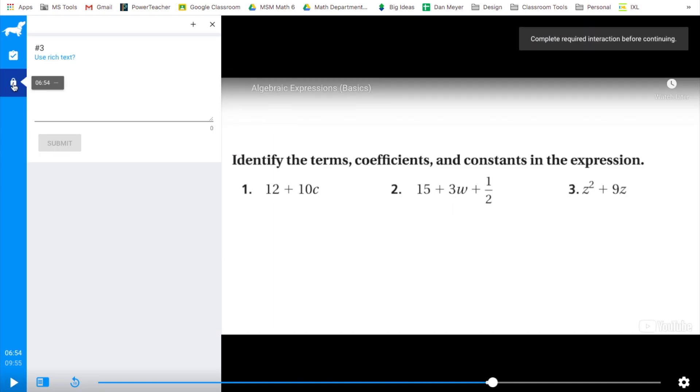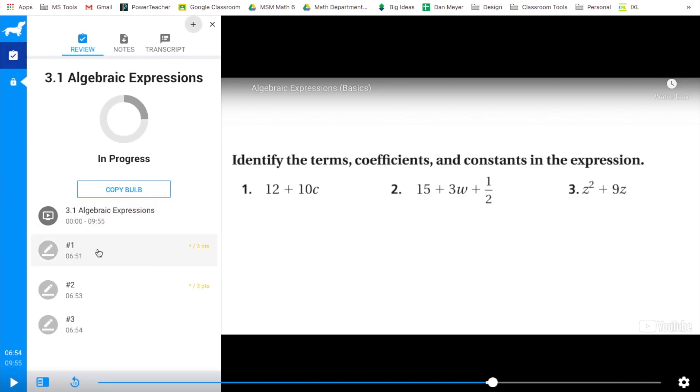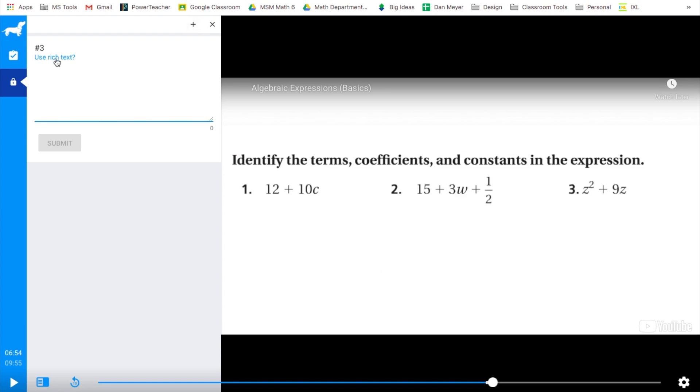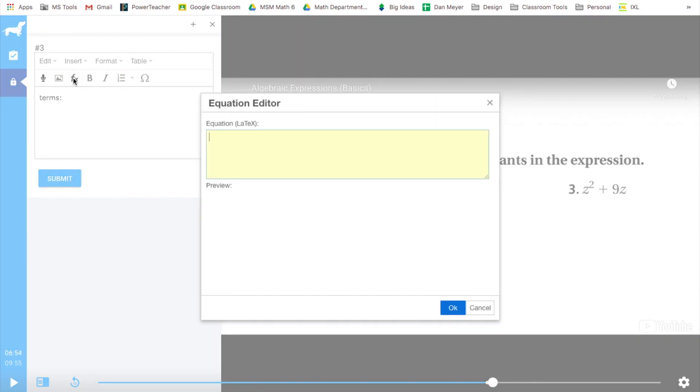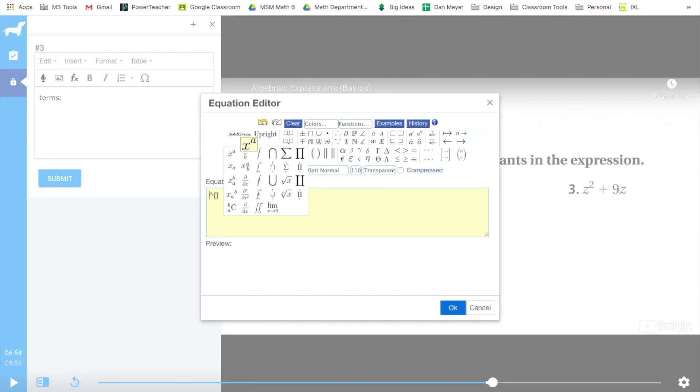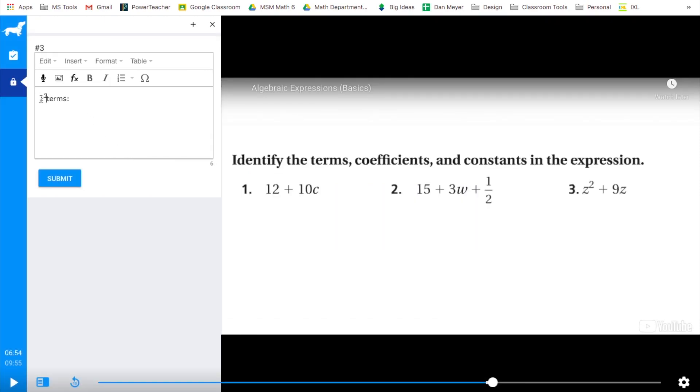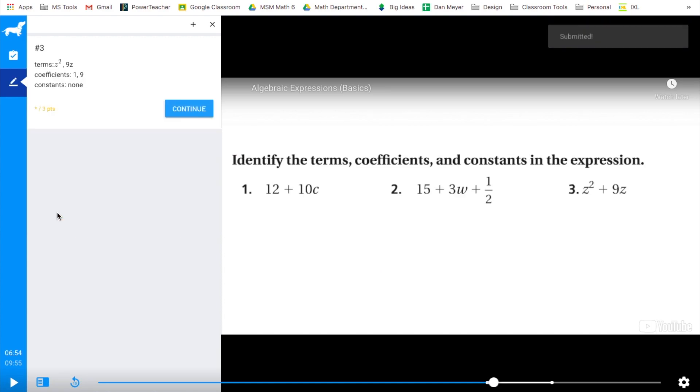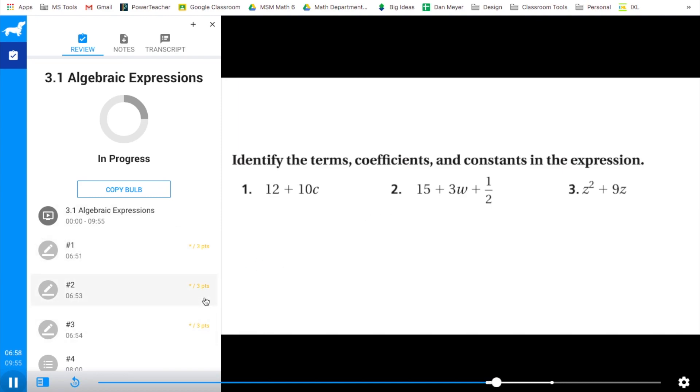I can see number one, I've answered. Number two, I've answered. Now I'm on number three. I'm going to use rich text again. For number three, I want to do z squared. My base is z. My exponent is two. There it is, z squared. I'll just drag it over. Space, comma, and nine z. I got my answers all ready for number three. Submit. I'm ready to go. And now, if I click continue, because I answered those three questions, now I can move on.